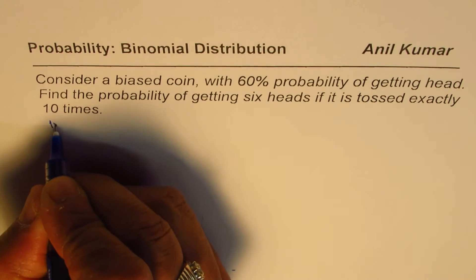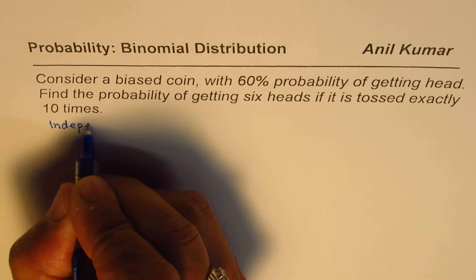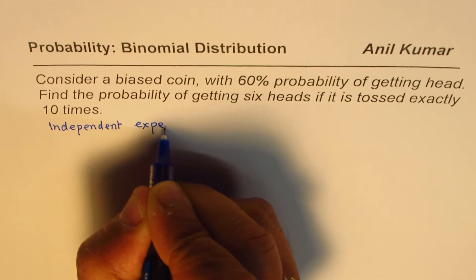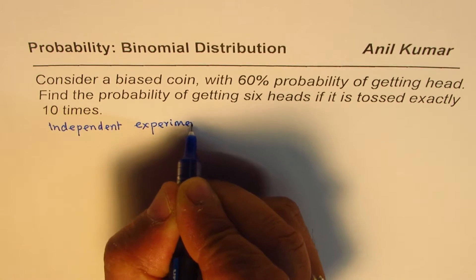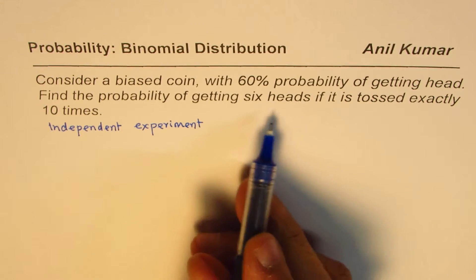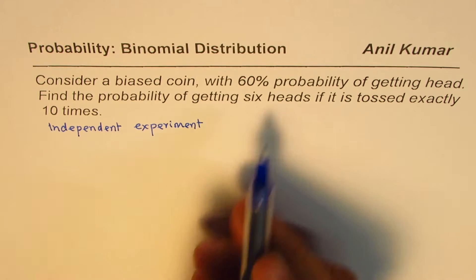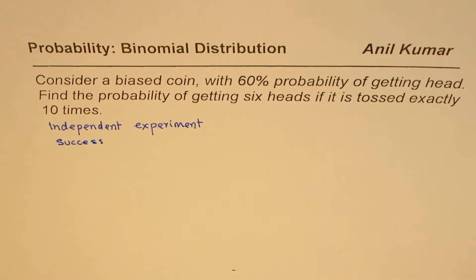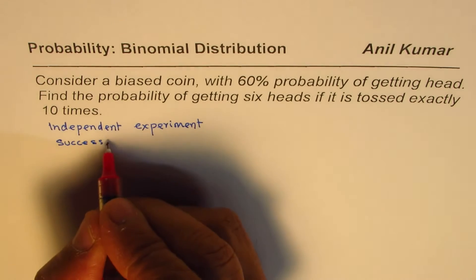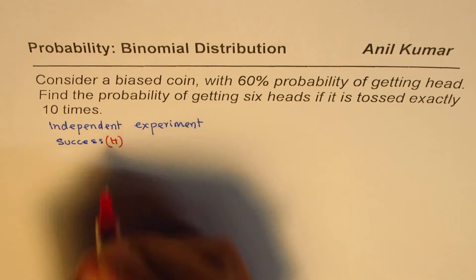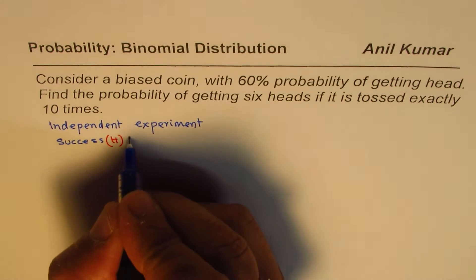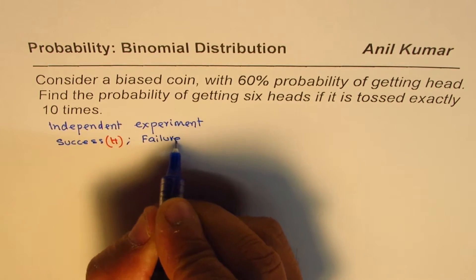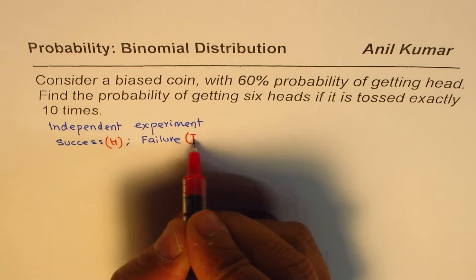So this is an independent experiment. And in this, we'll say success is getting a head. So we have two outcomes: success, which is heads, and the other outcome could be failure, which in our case will be tails.